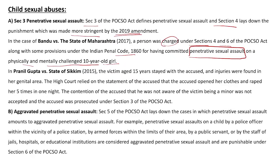In the case law of Pranil Gupta versus State of Sikkim, the victim was a 15-year-old child who lived with the accused. The accused committed penetrative sexual assault on her, and the injuries were mentioned in her medical reports. In the High Court, the accused had given a statement that he had opened her clothes and raped her five times in one night. The High Court relied on this statement. The contention of the accused that he was not aware the victim was a minor was not accepted, and prosecution started against the accused under Section 3, with punishment under Section 4 of the act.